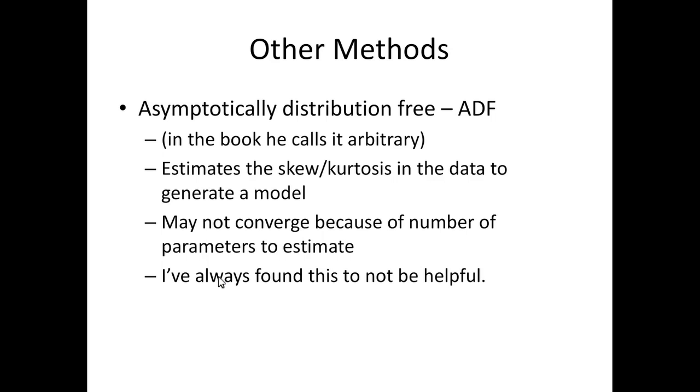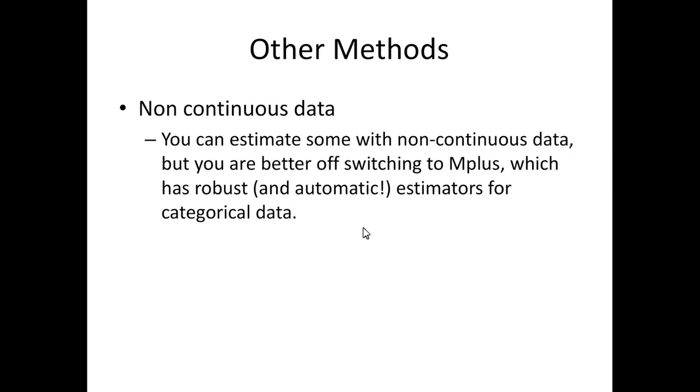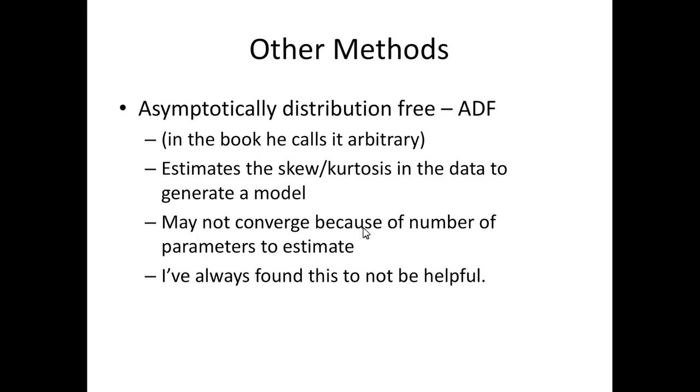Another method is asymptotically distribution-free, or if you're reading the Klein book he calls it arbitrary distribution-free. I've seen both. Depends on the program you're looking at. And it estimates the skew and the kurtosis in the data to generate your model. It may or may not converge. It has more trouble converging. And I have always found that this is a hot mess. It has never worked very well for me. And if it runs, usually maximum likelihood runs and I get much more stable estimates of standard error. And so I just wanted to let you know it's a thing that sometimes people do, but I've never had it work very well for me.